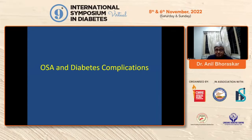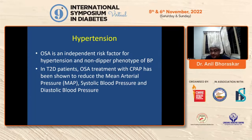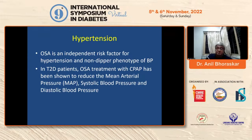OSA and diabetes complications: OSA is an independent risk factor for hypertension and the non-dipper phenotype. During sleep, people should dip their blood pressure — dippers are those whose blood pressure and pulse rate fall at night due to reduced autonomic drive. If that doesn't happen, they are non-dippers, who are vulnerable to develop many problems. The mean arterial pressure, both systolic and diastolic, must come down during sleep. This doesn't happen in many diabetics.